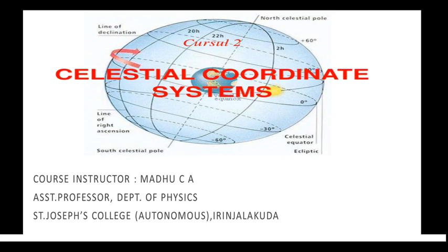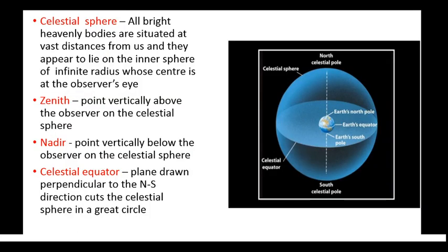So in this class we are going to discuss about three different types of celestial coordinate systems. But before moving on to the topic we have to familiarize with several terms related to these coordinate systems. The first one is celestial sphere.